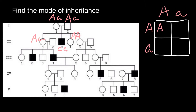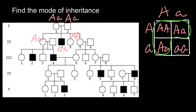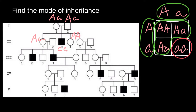The expected genotypes would be: capital A capital A, capital A small a, capital A small a, and small a small a. As you see, three quarters of the children in this family are going to have normal phenotype. Both parents would also have normal phenotype, and we can expect that one quarter in such a family would be affected. This is what we see here, but only on the first glance.